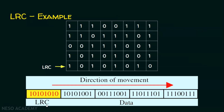How does the receiver use this? The receiver sets the LRC aside, takes all four data blocks, computes the LRC for those four data blocks, and then compares it with the LRC that was attached to the message. If both are matching, the receiver understands there are no errors in the transmission. If the LRCs are mismatching, the receiver ignores the data packet because of transmission errors.